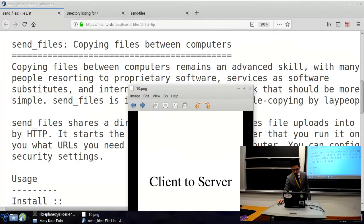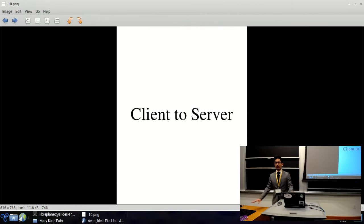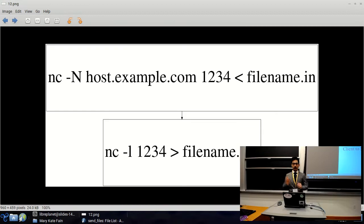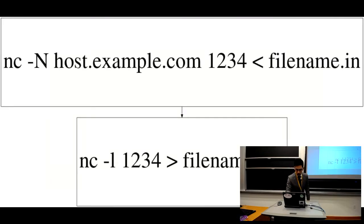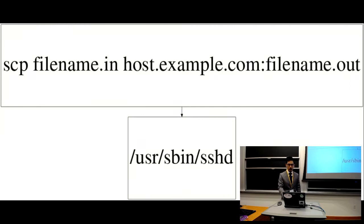We'll go through a few models of how to copy files between computers. One way: you have two computers, you want to copy a file from one to the other. You have a client and a server — the client uses some client software to connect to the server software and sends the file. You can do this with netcat, SSH, or SCP. The top one is the client, the bottom one is the server. These are the expert tools for copying files between computers.